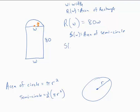Then S of W would be one half times pi times the radius squared. The radius is W over 2, and that's being squared.